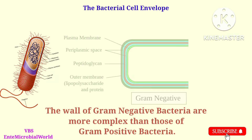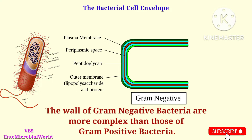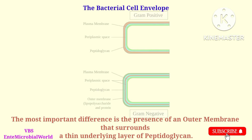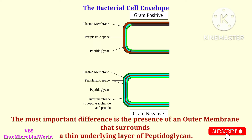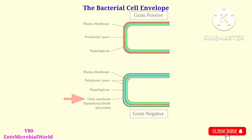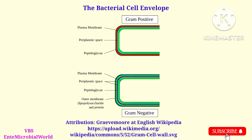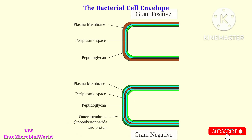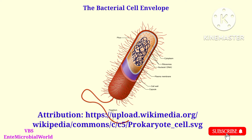The walls of gram negative bacteria are more complex than those of gram positive bacteria. The most important difference is the presence of an outer membrane that surrounds a thin underlying layer of peptidoglycan. We learned this very important difference between gram positive and gram negative bacterial cell envelopes, without which we cannot understand the difference between the protoplast and spiroplast.